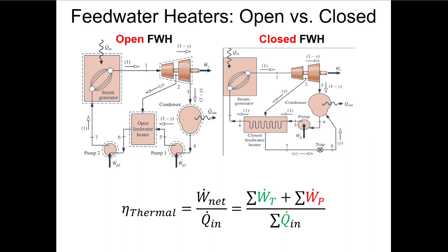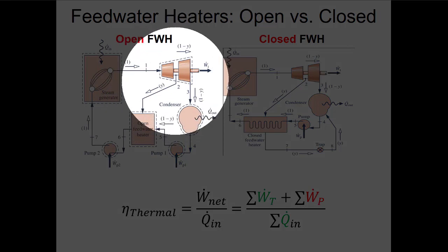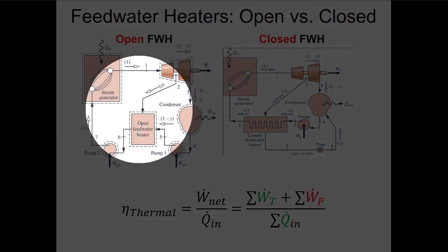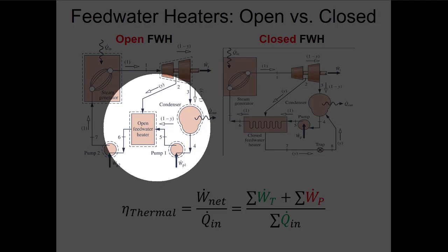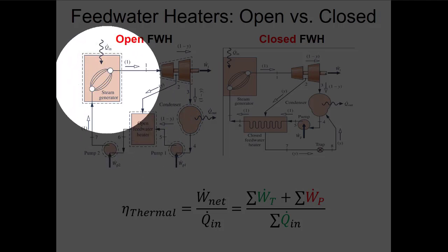Over the last few lectures we've been talking about heat engines and Rankine cycles in particular. Last class we introduced the idea of Rankine regeneration cycles. In both of these types of cycles we split mass off in between the high pressure and low pressure turbines, and use that mass to preheat the cold water coming into our feed heater so that we put less heat in at the steam generator.